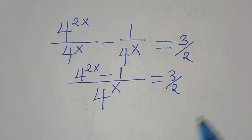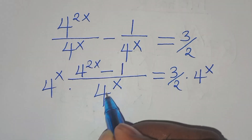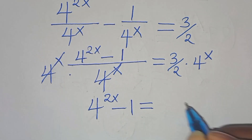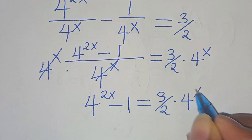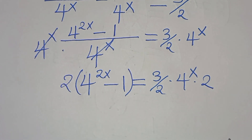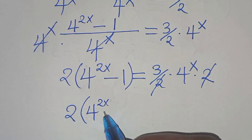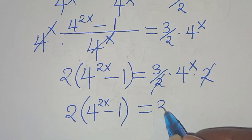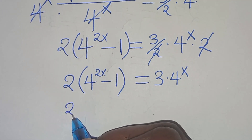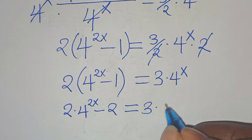We can multiply both sides by 4 to the power of x, so that we have 4 to the power of 2x subtract 1, equals 3 over 2 multiplied by 4 to the power of x. The next step is to multiply both sides by 2, so that we have 2 into the parentheses: 4 to the power of 2x minus 1, equals 3 multiplied by 4 to the power of x. Opening the parentheses: 2 multiplied by 4 to the power of 2x subtract 2, equals 3 times 4 to the power of x.